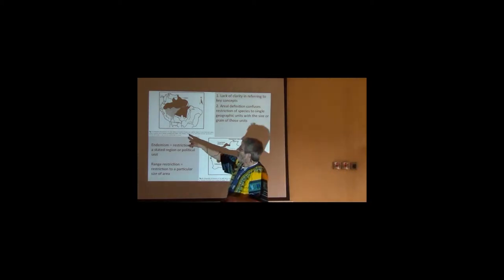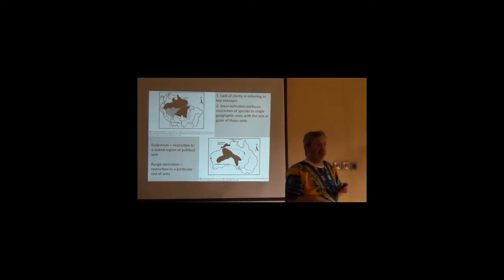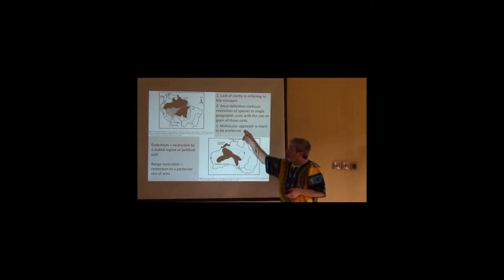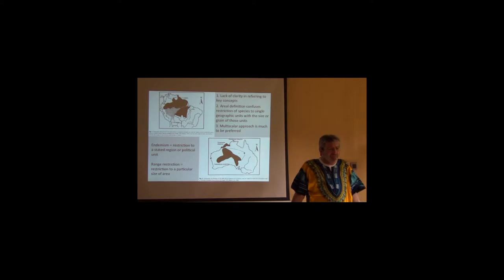The Andes are a narrow mountain chain, just like the Eastern Arc Mountains here. So almost any species in the Andes, especially at high elevations, will be closer to that 50,000 square kilometer criterion than almost any species in the Amazon, even though each fills a single biome or a single biogeographic unit.